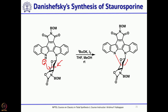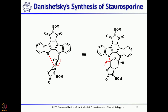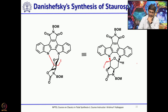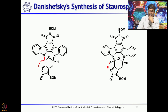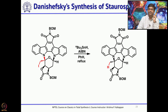The iodide should be removed to have the methyl group. That was done with tributyltin hydride. This gives the structure which corresponds to staurosporine — remove the iodide using tributyltin hydride to get the methyl group.